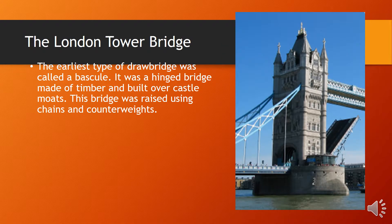The London Tower Bridge. The earliest type of drawbridge was called a bascule — a hinged bridge made of timber and built over castle moats. This bridge was raised using chains and counterweights.